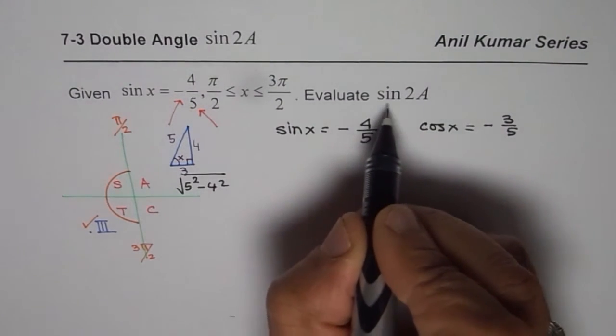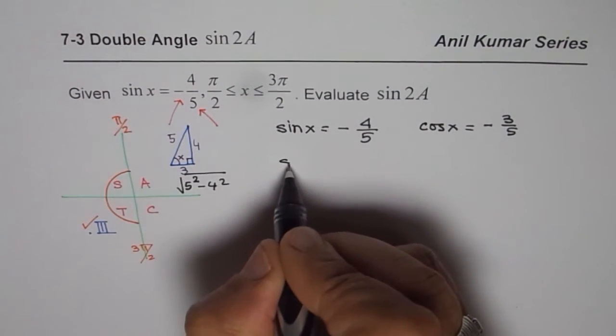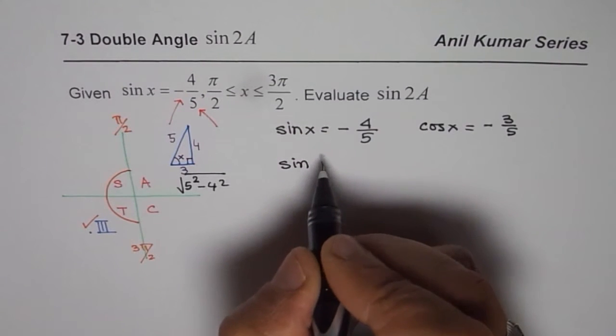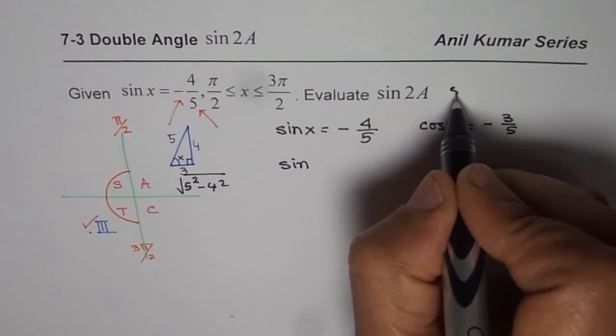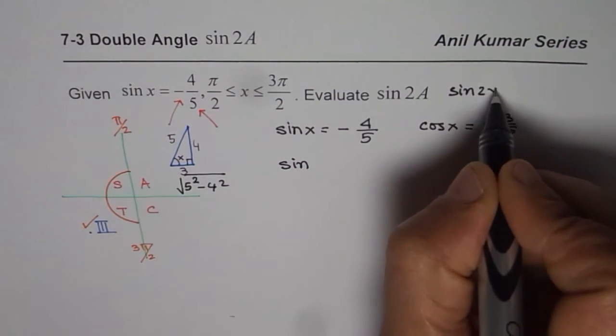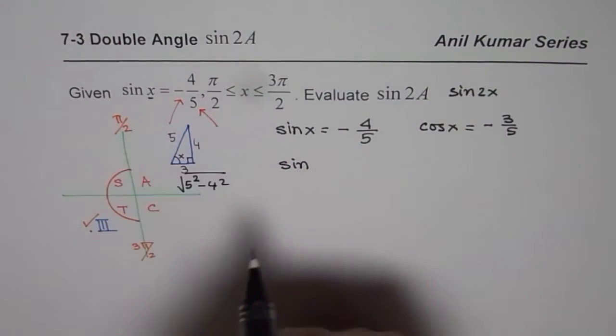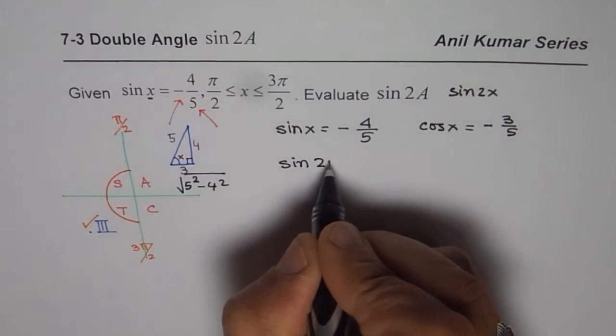Now we need to evaluate sine of 2A. Sine of 2A is a misspelling, it should be sine of 2x. We are talking about angle x, so we will evaluate sine of 2x.